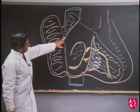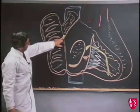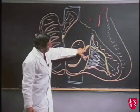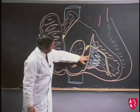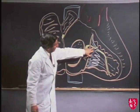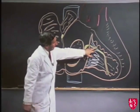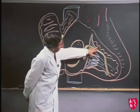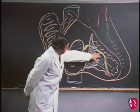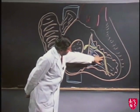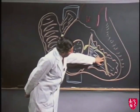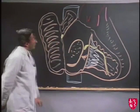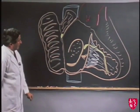The sinoatrial node here, on the upper part of the crista terminalis. The atrioventricular node here, just close to the valve. The atrioventricular bundle dividing on the upper part of the septum into the left branch and the right branch. The right branch goes down the right side of the septum under the endocardium, and forward on the moderator band, and then is distributed as the Purkinje plexus.